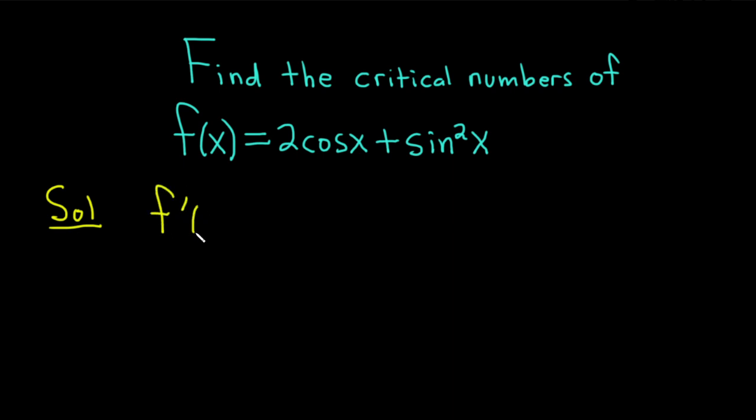We have f prime of x equals the derivative of cosine is negative sine, and we have a 2 here, so this is going to be negative 2 sine x. And here you can think of this as sine x quantity squared. We're going to use a chain rule. We're going to bring down the 2, leave the inside untouched which is sine x, subtract 1 from the exponent so you have a 1 here.